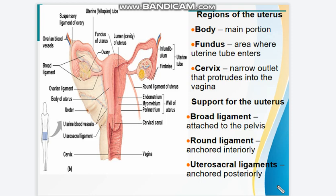The follicles in the ovaries produce the female sex hormones progesterone and estrogen. These hormones prepare the uterus for implantation of the fertilized egg. Ovarian follicle stages: the primary follicle contains an immature oocyte. The Graafian or vesicular follicle is a growing follicle containing a maturing oocyte. Ovulation occurs when the egg is mature and the follicle ruptures — this occurs approximately every 28 days. The ruptured follicle is then transformed into the corpus luteum. Thanks for watching; please subscribe, hit the like button, and share the video.